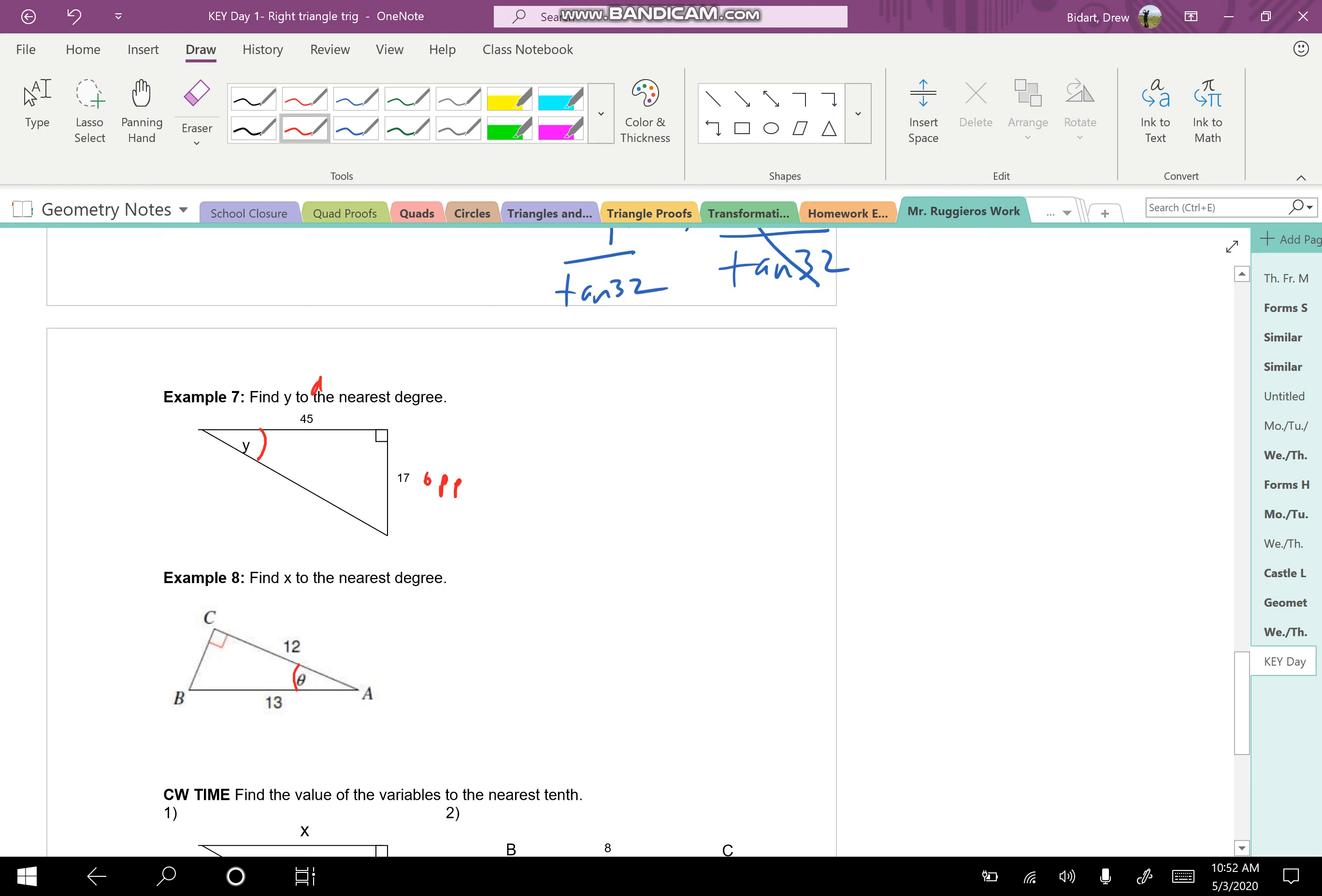This time, actually 7 and 8 are kind of similar in a way. Because this time, we're not trying to find a side. We're trying to find the angle. So in number 7, from the perspective of the angle, that's y. The 17 would be the opposite. The 45 would be the adjacent. So this will be the tangent. That's TOA.